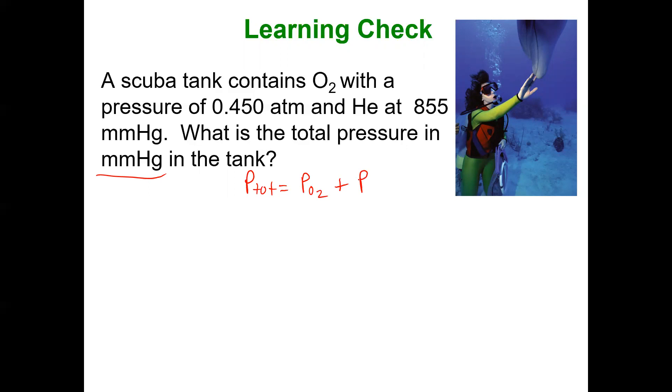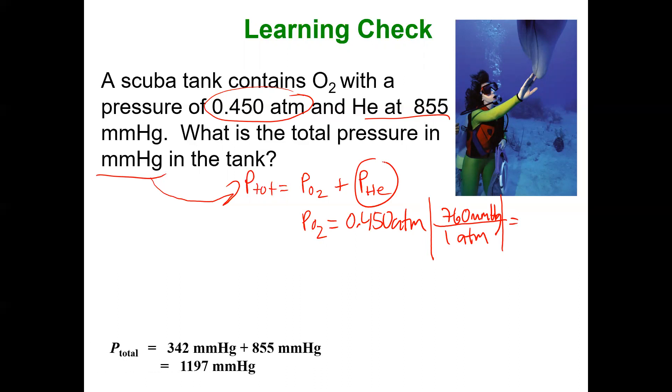Now I want my total pressure to be in millimeters of mercury. My helium is already in millimeters of mercury, so I just need to make sure to convert my pressure of oxygen which I have as 0.450 atmospheres into millimeters of mercury. That's an easy conversion factor. By now you probably have it memorized. One atmosphere is 760 millimeters of mercury, and that will give me the amount of millimeters of mercury that I can add to the 855 millimeters of mercury of helium. This is the pressure of my oxygen, and that looks right, about half of 760. 342 plus 855 millimeters of mercury add up to 1197.